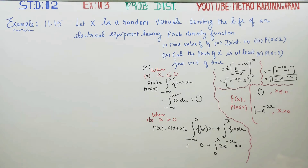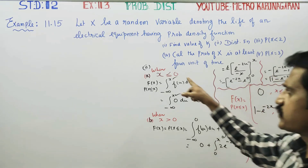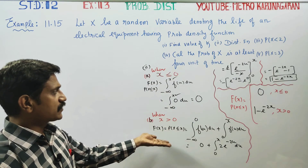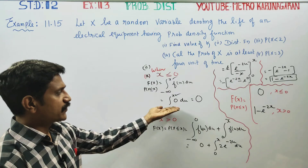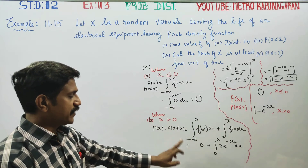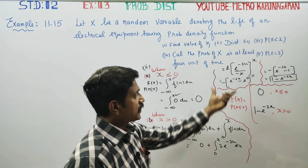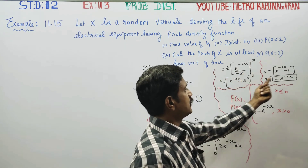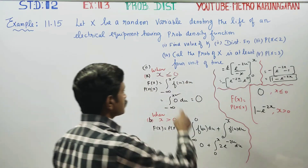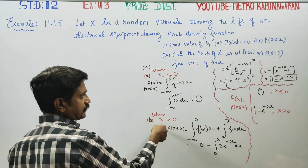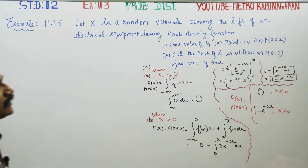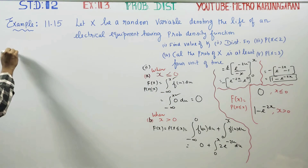So capital F(x) is defined as: 0 when x is less than or equal to 0, and 1 minus e to the power minus 2x when x is greater than 0. Now entering the third subdivision.